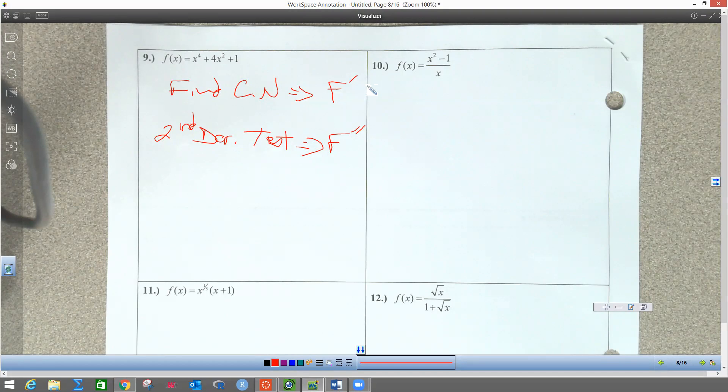We're supposed to find critical numbers on number 10, which means we're going to use the first derivative. We need to know that critical numbers occur where the first derivative equals zero or where the first derivative is undefined.